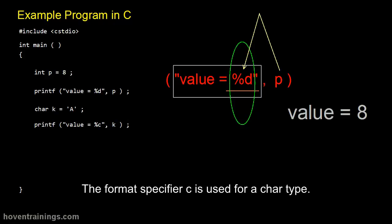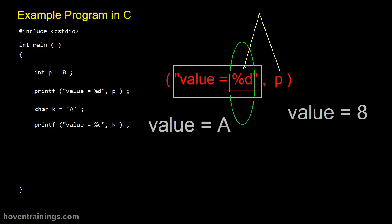The format specifier C is used for a char type. And F is the format specifier for a float.